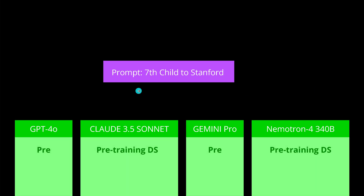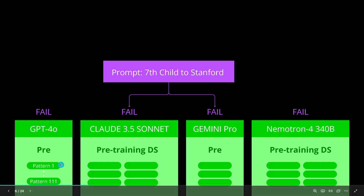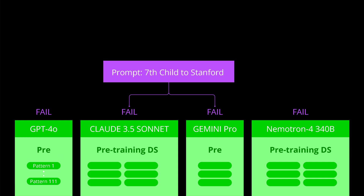Those LLMs have been pre-trained on particular datasets. And if we talk about causal reasoning, you think that in those datasets you have pre-trained examples on which the system learned how to argue and how to do causal reasoning. So maybe in GPT-4 Omni you had pattern 1 to pattern 111 as the pre-trained dataset for the system to learn causal reasoning — and so on for all the other models.